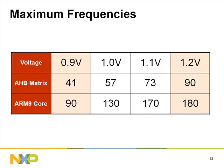Maximum frequencies: the table shows maximum clock speeds for the AHB matrix and ARM9 core at different voltage levels. Maximum throughput is achieved at 1.2 volts. The voltage on the LPC 313X can be lowered all the way to 0.9 volts. Combined with dynamic clock scaling, this allows automatic reduction of power consumption when there is no bus activity.